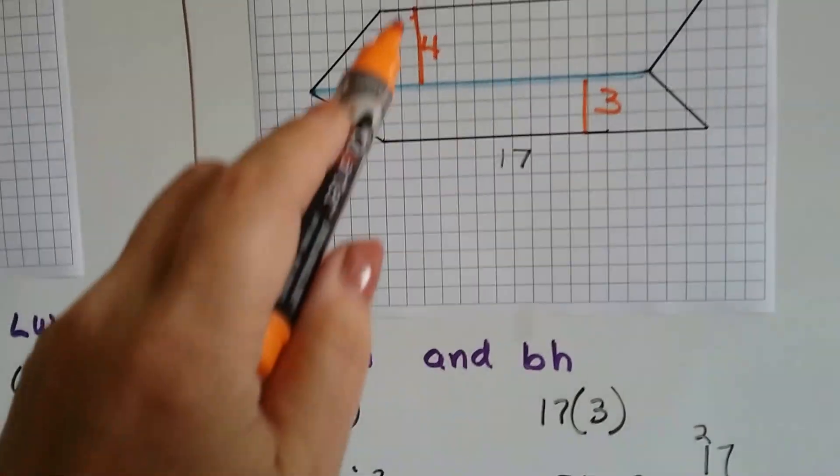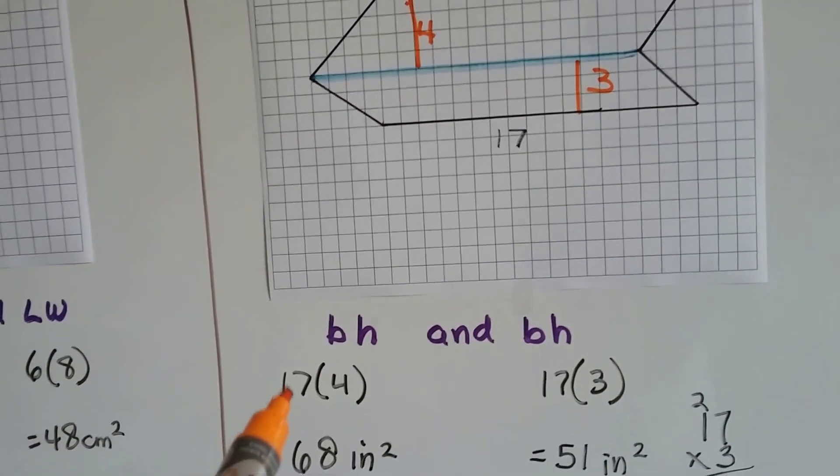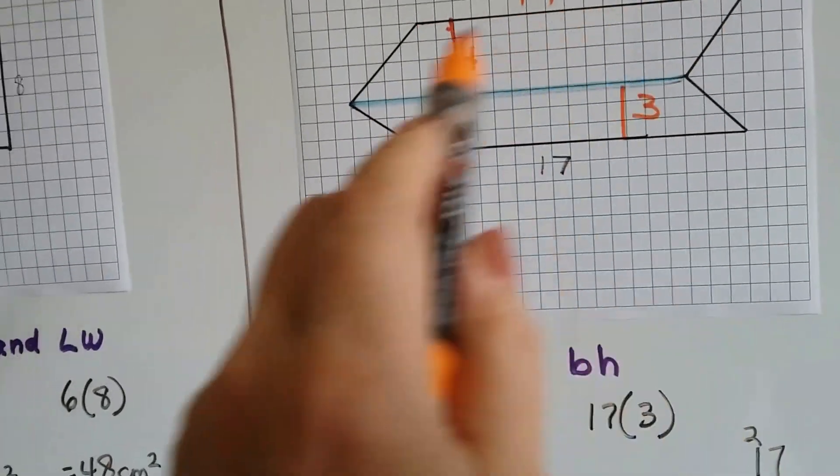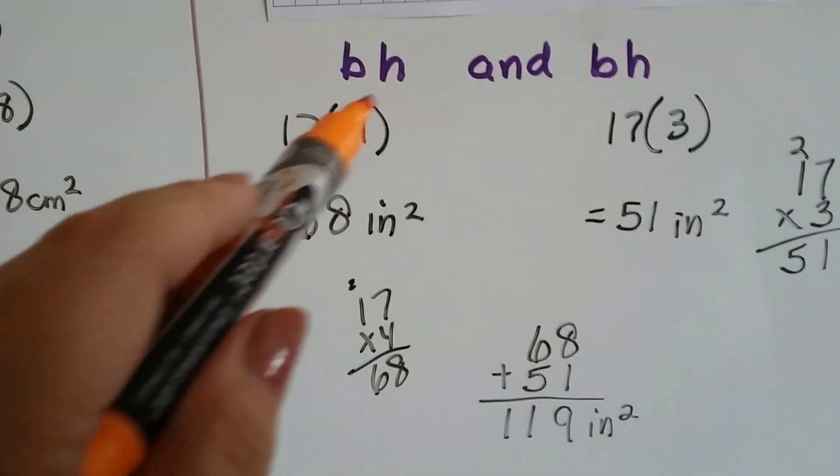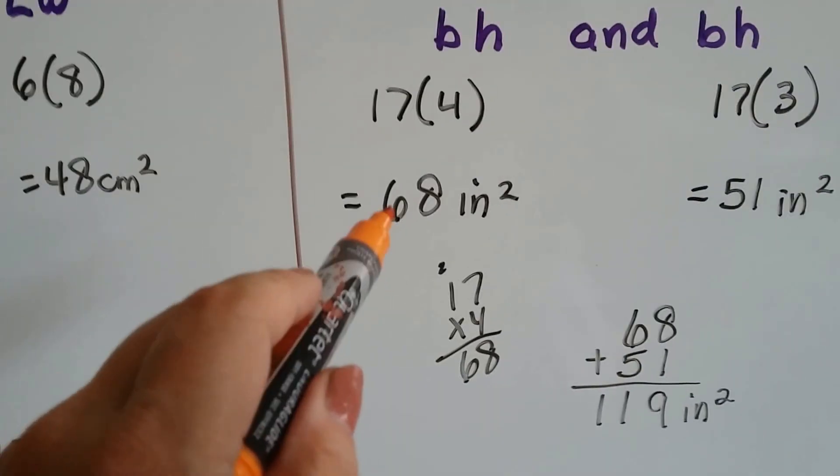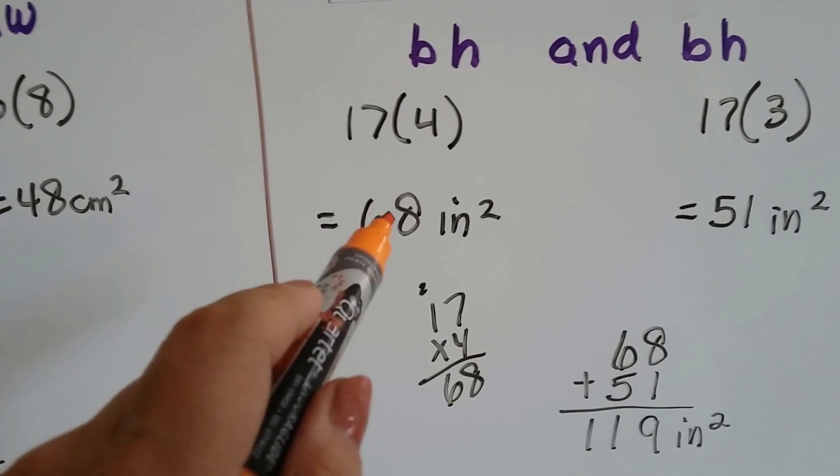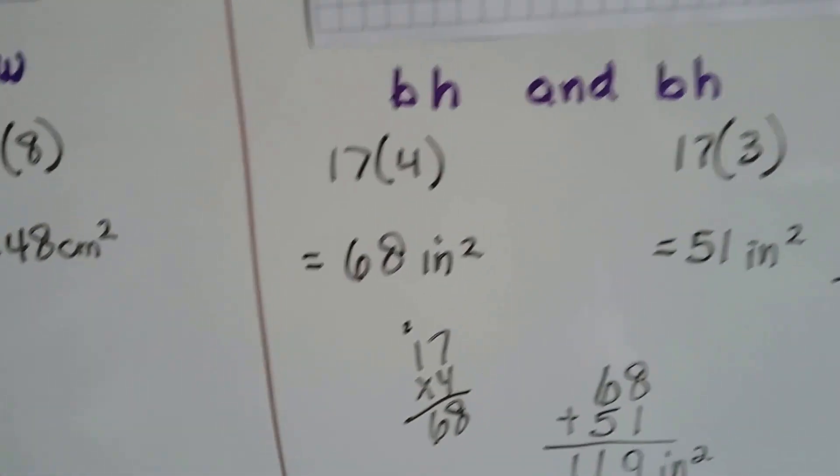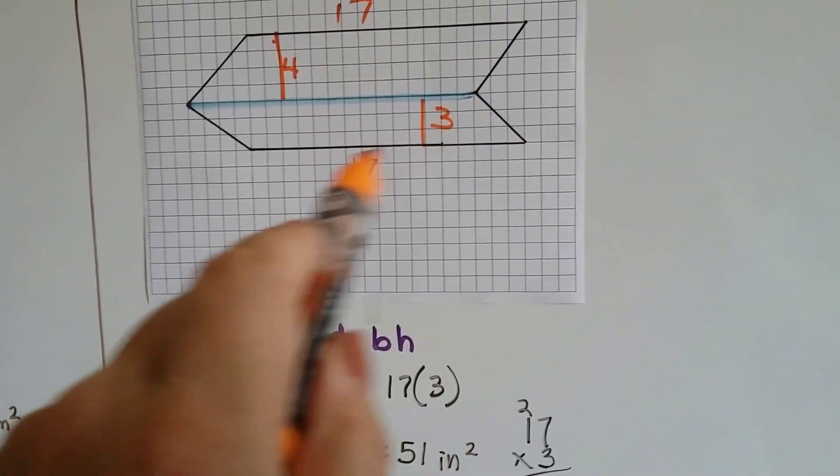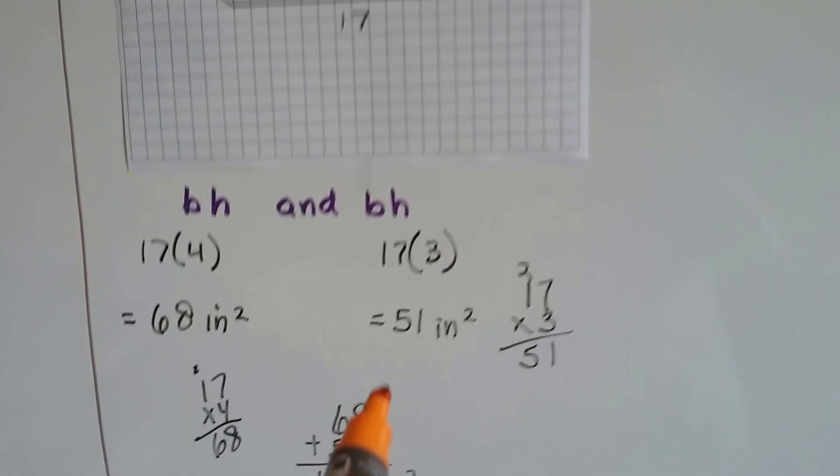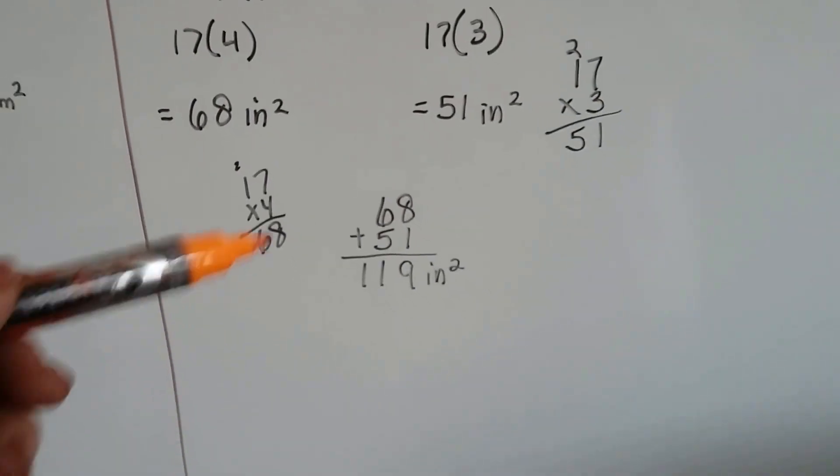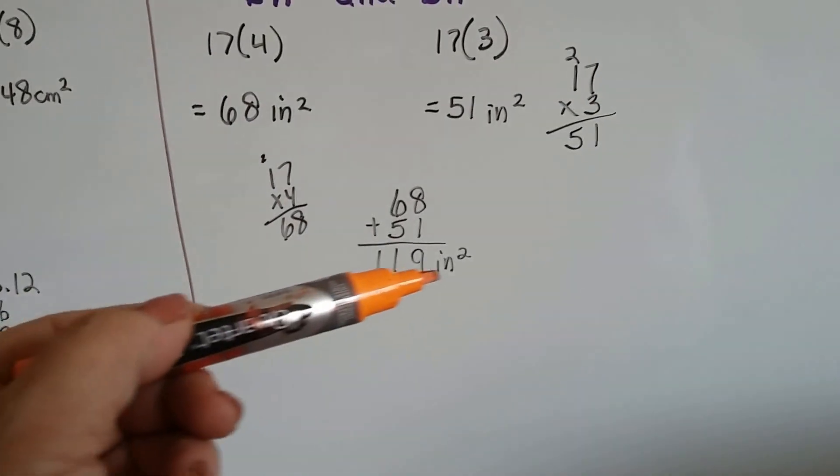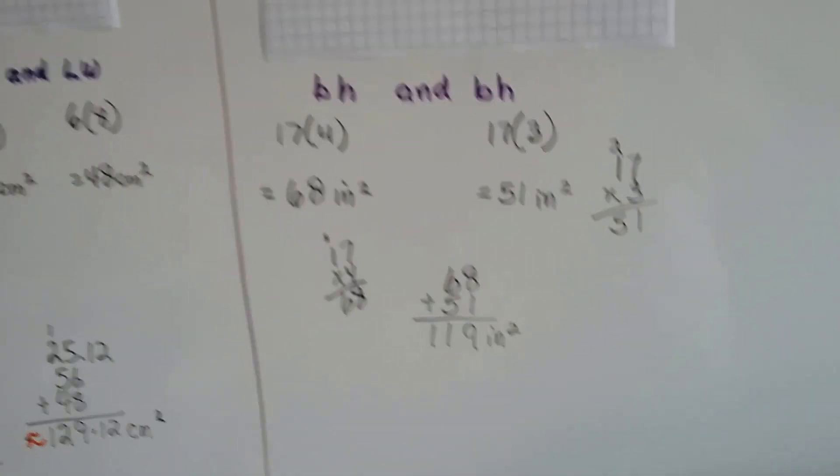So, for this top one, we're going to do the 17 base times 4. 17 times 4 is 68. So, the top parallelogram is 68 inches squared. The bottom one is 17 with 3 for a height. 17 times 3 is 51. It's 51 inches squared. We add the 68 to the 51 and get 119 inches squared.